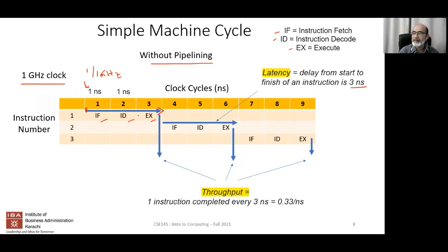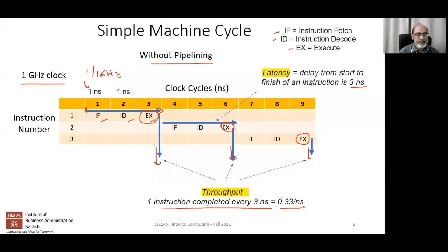Throughput is determined by how frequently output comes in steady state. Without pipelining, after three cycles one instruction completes, then another three cycles for the second, and so on. Throughput is one instruction every three nanoseconds, or 0.33 instructions per nanosecond. Notice that throughput has different units from latency — latency is in seconds or nanoseconds, while throughput is the inverse: one per nanosecond.